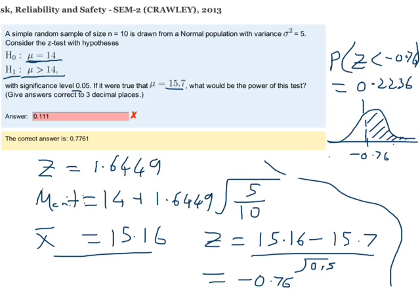The final power is going to be equal to 1 minus 0.224, which equals 0.776. And that's our correct answer, so it looks like we're on the right track.